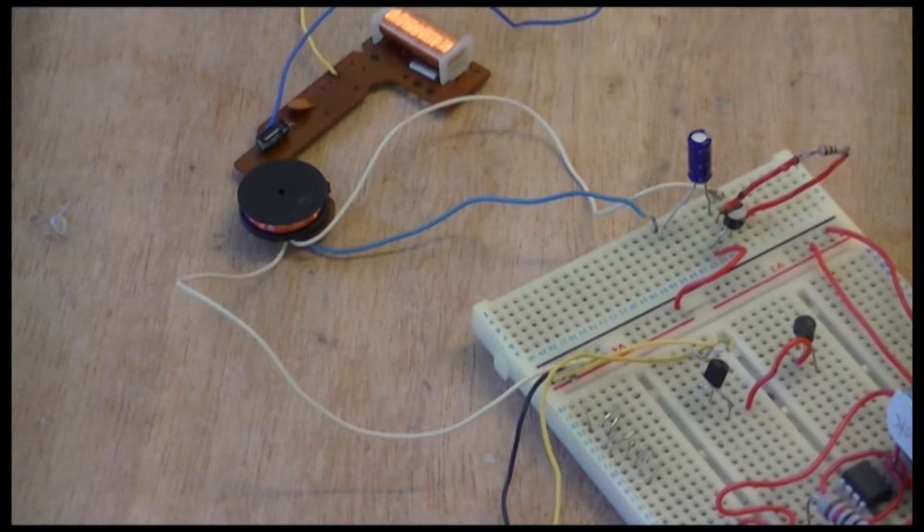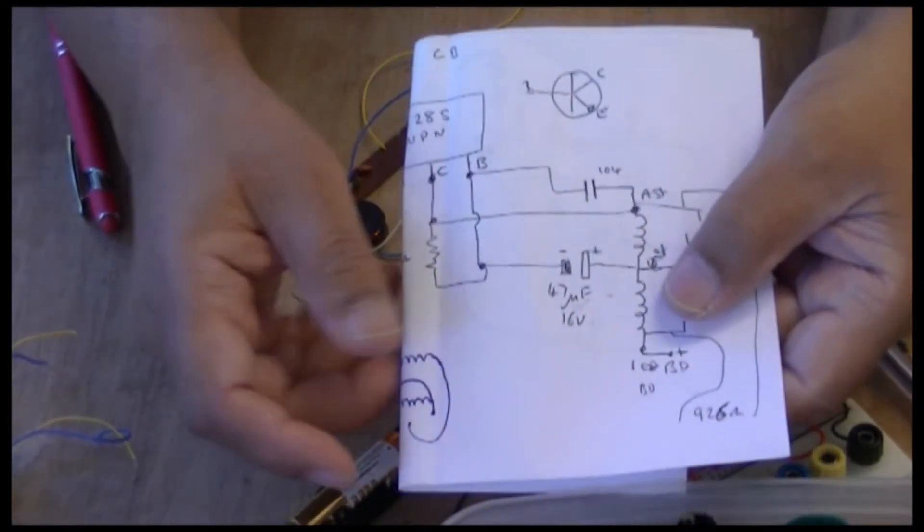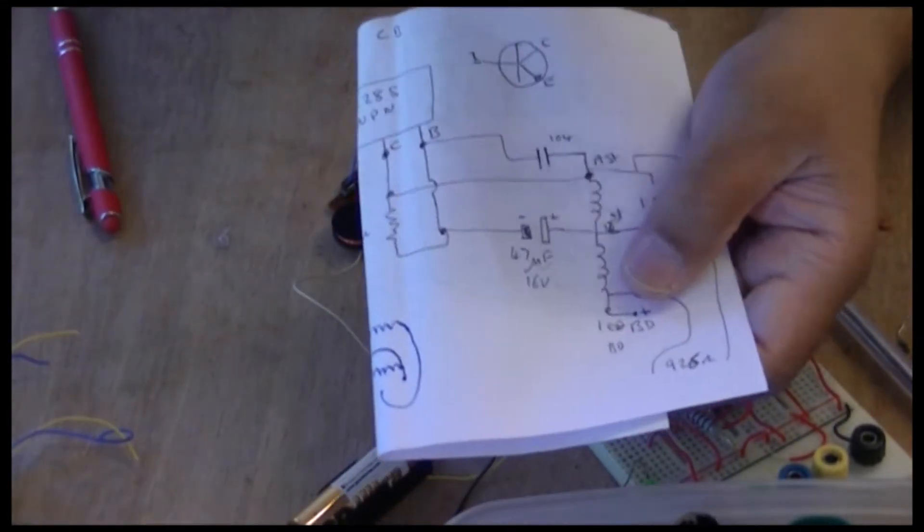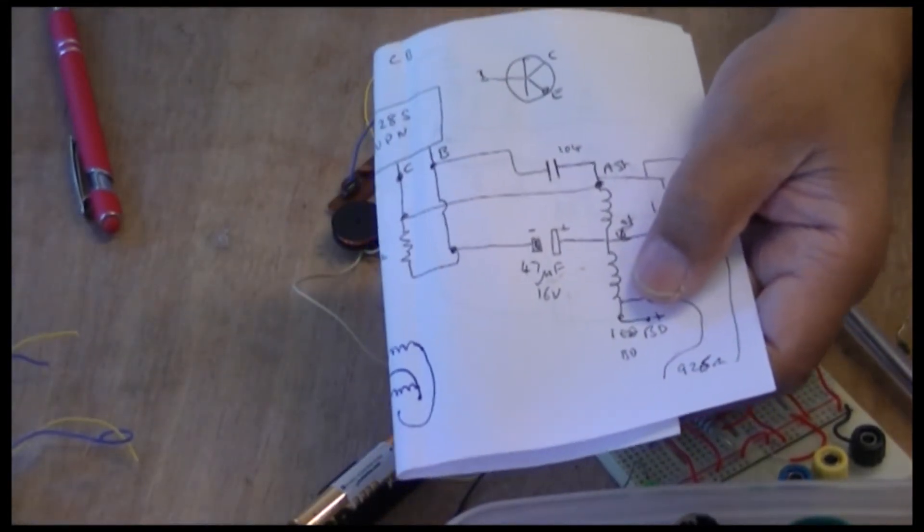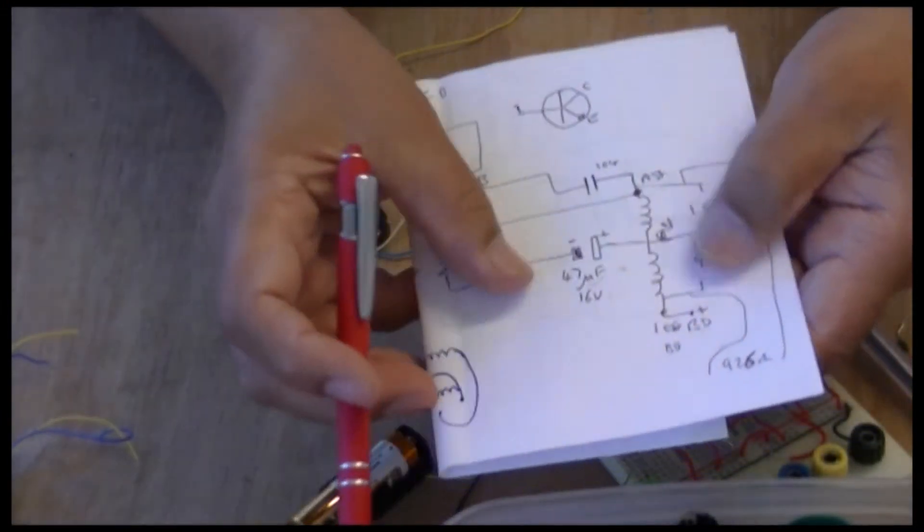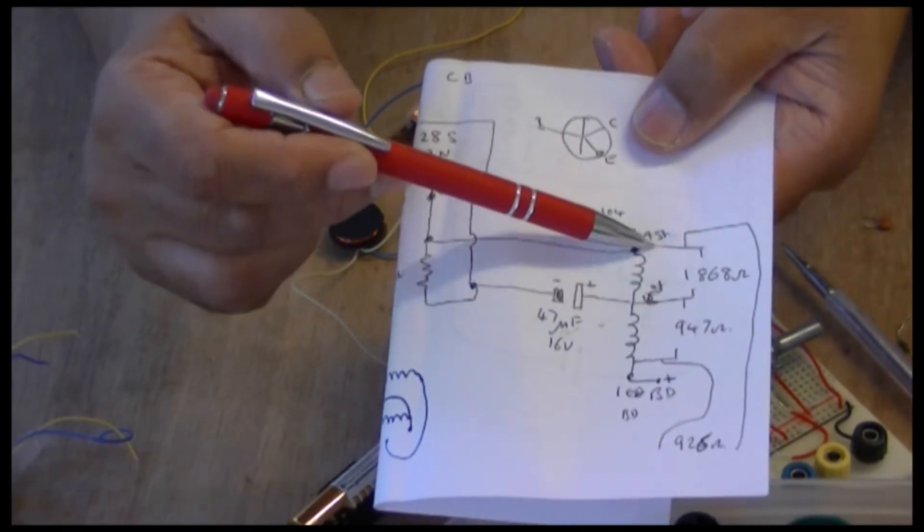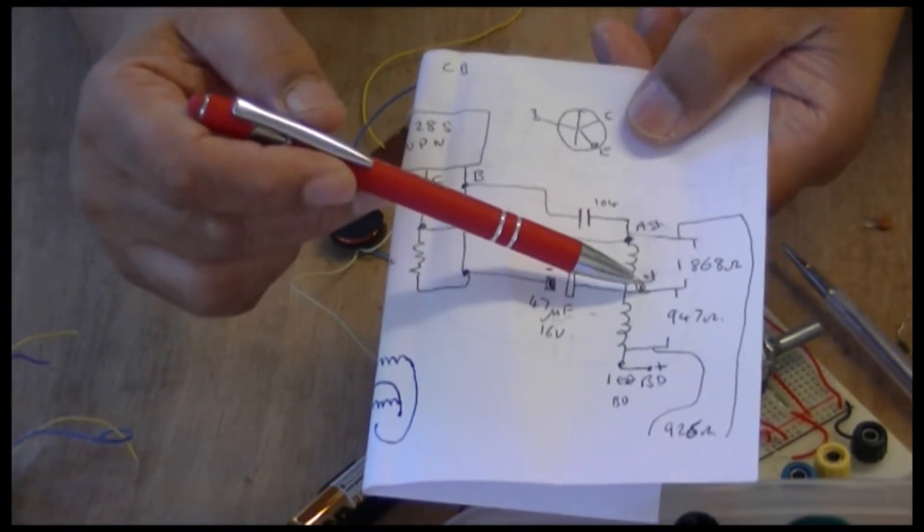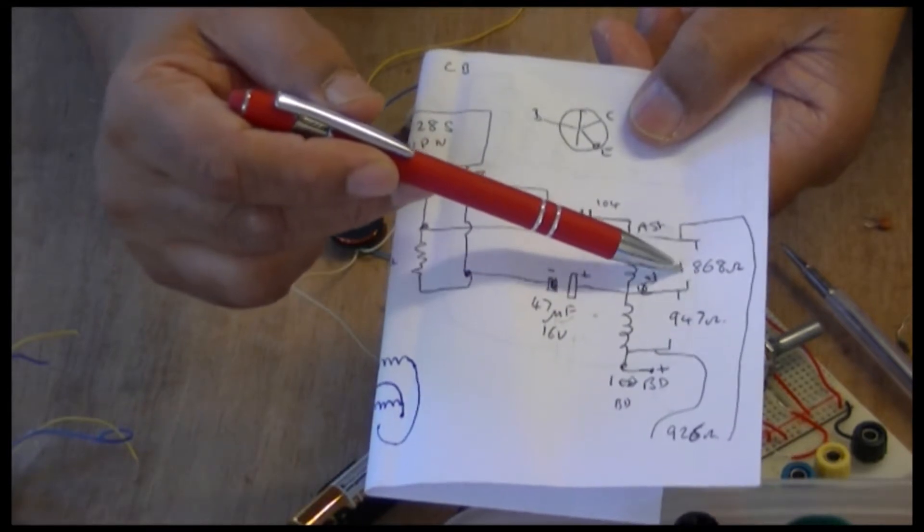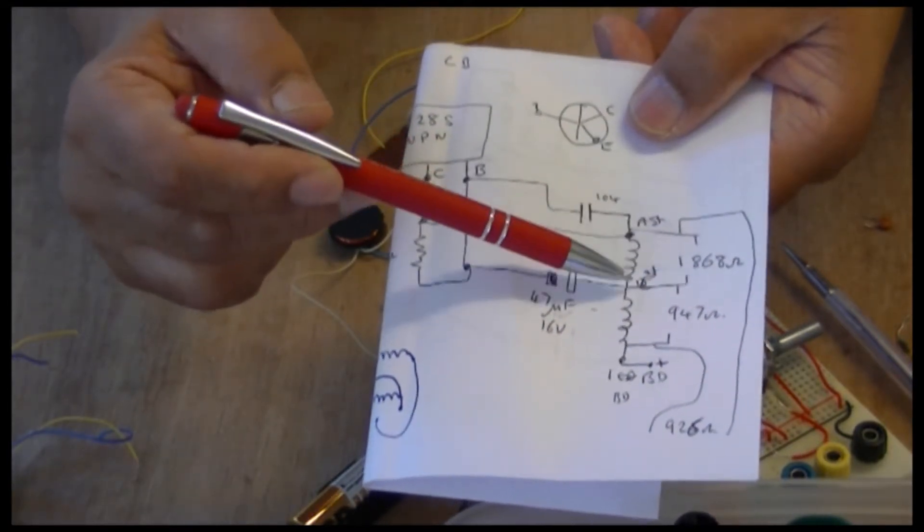But to let you know, I checked the resistance. Okay, this is my original drawing. Let's check the resistance of this coil. And to show you, the resistance between there and there is 1800-something ohms there between that coil there. But the resistance between there and there is 947, half of it.